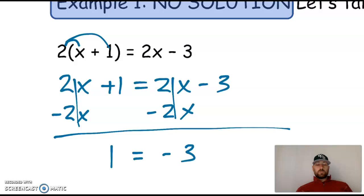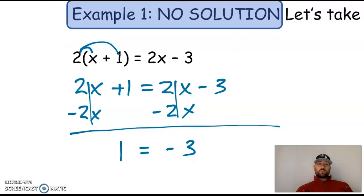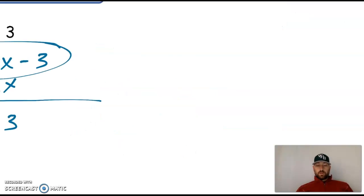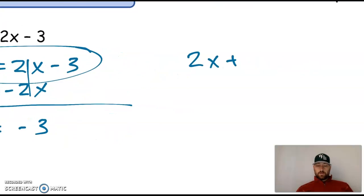All right, that is an untrue statement. So we call that no solution. All right, where does that come from? Well, if I go back to that step right there, 2x plus 1 is equal to 2x minus 3. If I think about what that's saying, it's saying a number times 2 plus 1 is equal to the same number times 2 minus 3. There's no number that you can add 1 to it or subtract 3 from it and it will be the same thing. All right, so there is no solution.